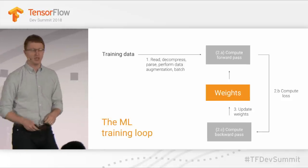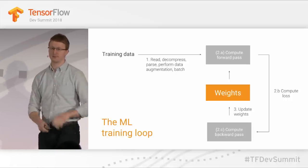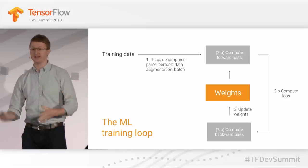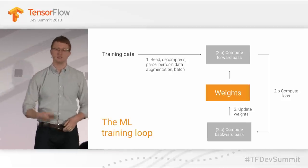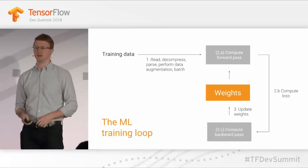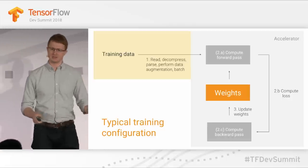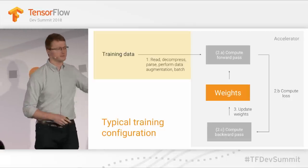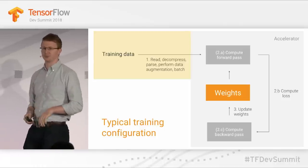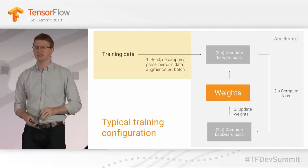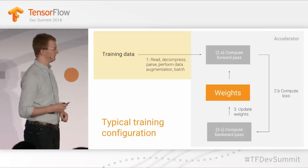In phase two, you compute the forward pass of your model, the loss, the backwards pass, and your gradients. Finally, after you have the gradients, you update the weights — the things you're trying to learn — and repeat the cycle. Across a wide variety of accelerators, your training data and pre-processing in phase one happens mostly on CPUs, while the accelerator takes over phases two and three.